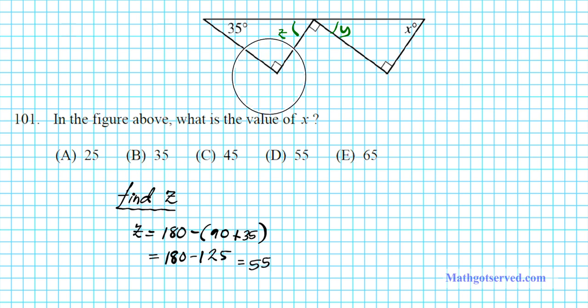Now that we know those two angles on the straight line, we're going to use this information to find what y is. Using the linear pair postulate, we know that if you have a sum of two or more angles on a straight line, they all add up to 180 degrees. So next we're going to find y.